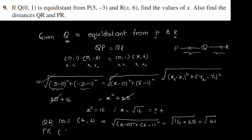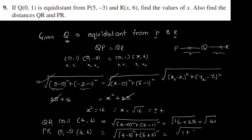P is (5, minus 3) and R is (4, 6). That gives root of (4 minus 5) whole square plus (6 minus minus 3) whole square, which is (minus 1) squared plus (9) squared, equal to 1 plus 81, giving root of 82. That's the answer.